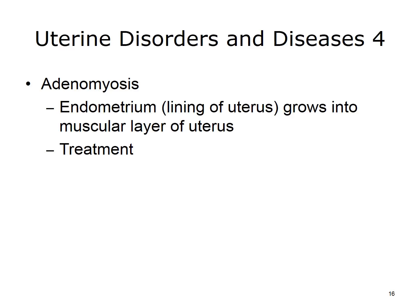Adenomyosis occurs when the endometrium grows into the muscular layer of the uterus. Treatment includes pain medications, hormones, and surgery.